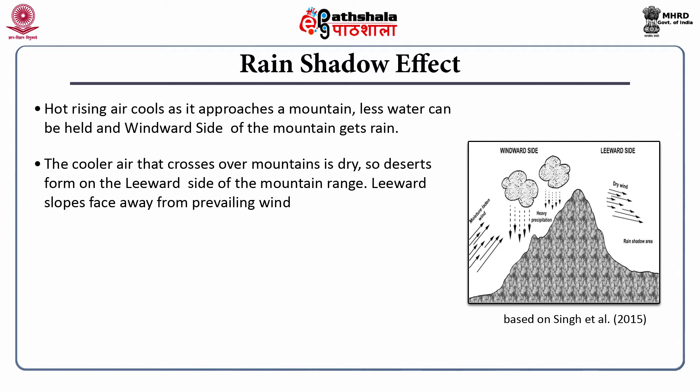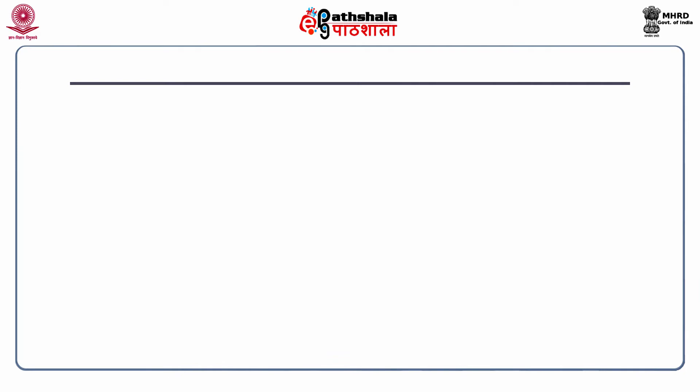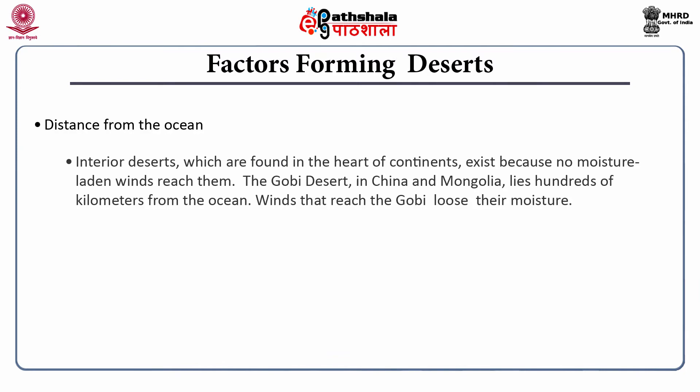Leeward slopes face away from prevailing wind. Some examples of rain shadow effect deserts are the Gobi Desert, north of the Himalayas. Major rain shadow effects also occur in the Atacama Desert in Chile, caused by the Andes mountains. The third factor is distance from the ocean. Interior deserts exist because no moisture-laden winds reach them. The Gobi Desert in China and Mongolia lies hundreds of kilometers from the ocean, and winds that reach it lose their moisture.